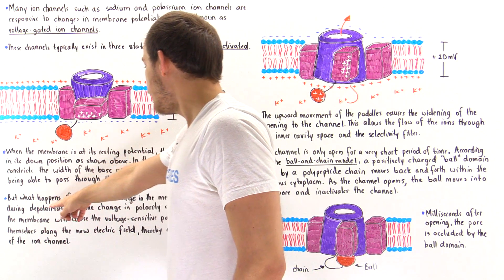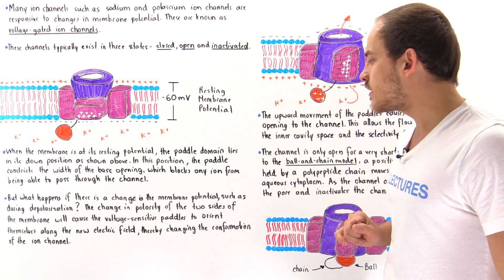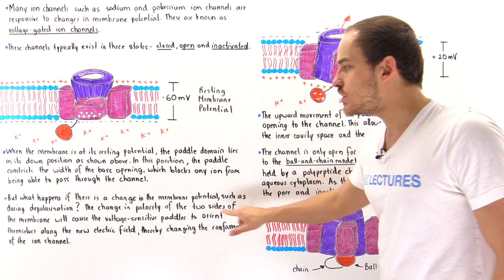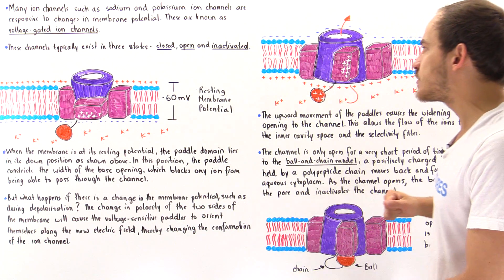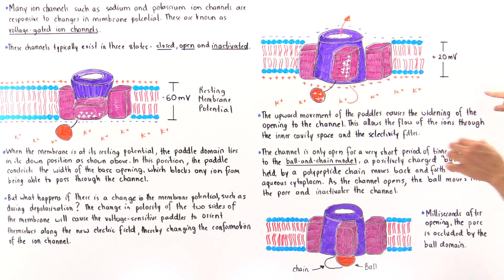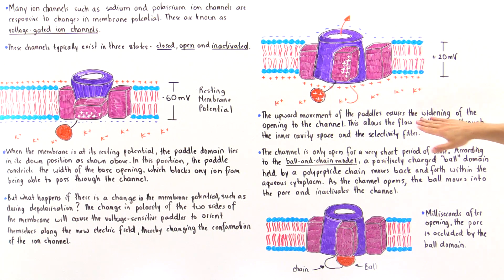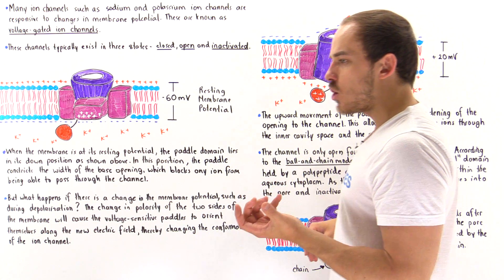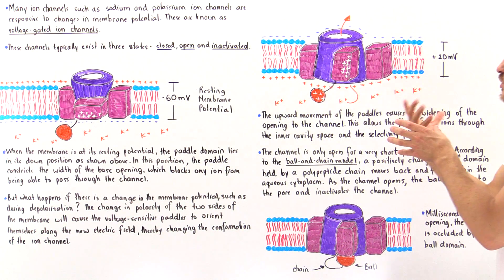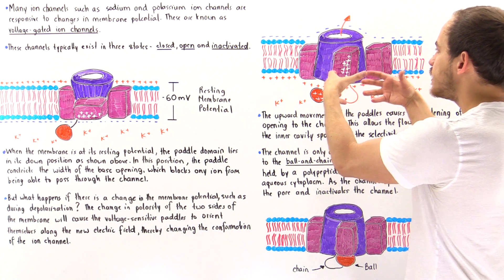So when there is a change in membrane potential during depolarization, the change in polarity causes these voltage-sensitive paddle domains to orient themselves upward along the new electric field. The upward movement of the paddles causes the widening of the pore opening, allowing the spontaneous flow of potassium ions — and the same is true for the sodium voltage-gated channel — allowing movement of ions through the pore and selectivity filter inside the inner cavity.